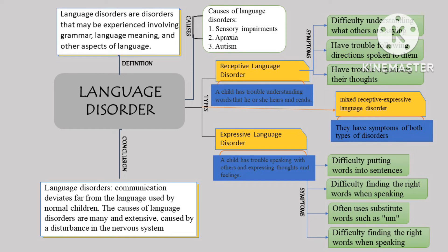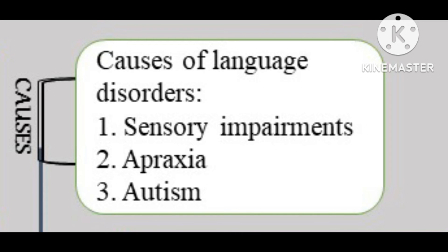Language disorders can occur in children with other developmental problems such as autism spectrum disorders and hearing loss, and can also be caused by damage to the central nervous system. Here are some causes of language disorders. First, sensory impairments, which are divided into two types: blindness and deafness.